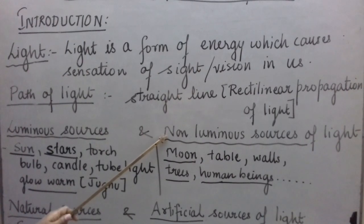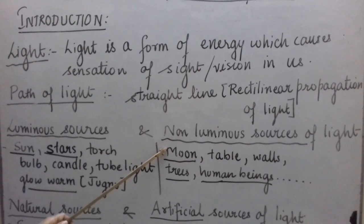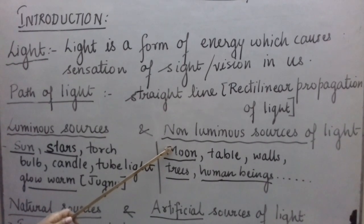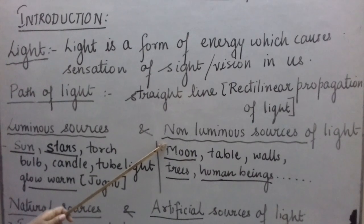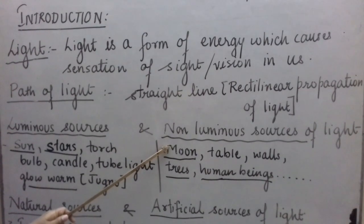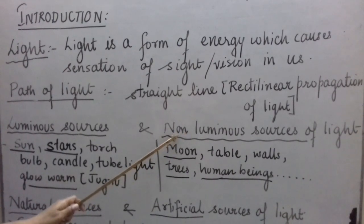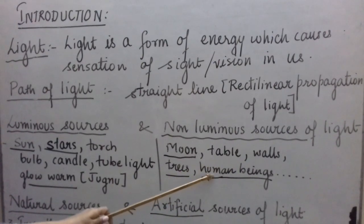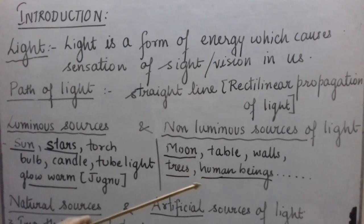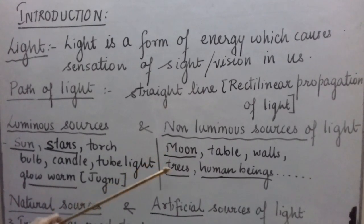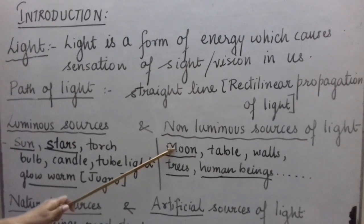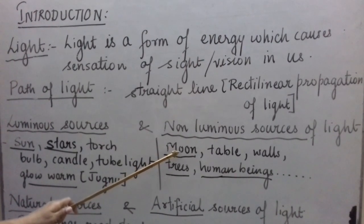We see them because light which is reflected from them reaches into our eye, and light which gets reflected from them is incident on them by some other natural sources or other sources of light available in the surroundings. So, non-luminous sources of light are moon, table, walls, trees, human beings. These all things are visible to us because light from them gets reflected into our eyes and that light is not emitted by them but it is incident on them from the surroundings.